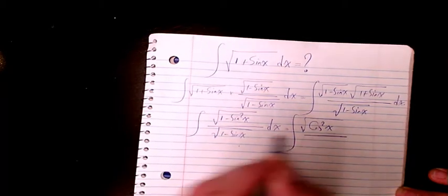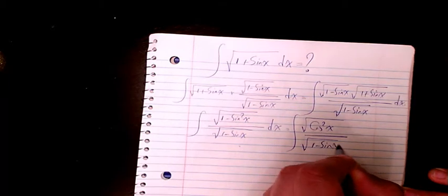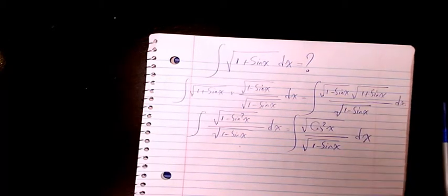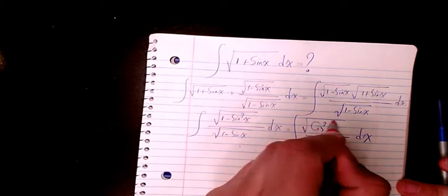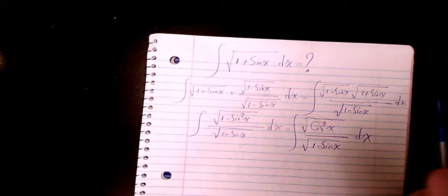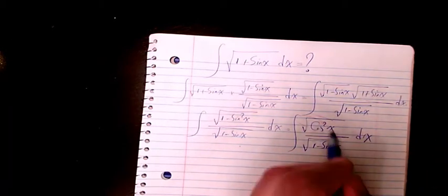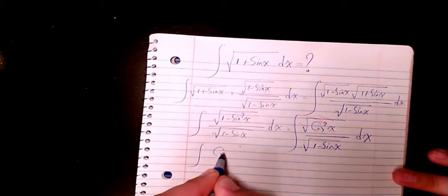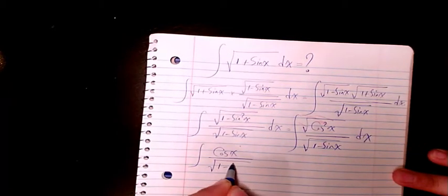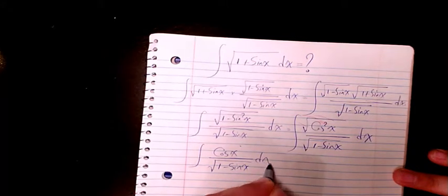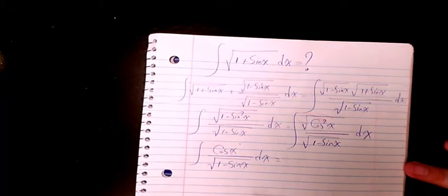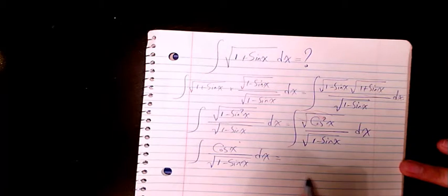Then square root cancels out with the exponent, so it will be cosine x divided by square root of one minus sine x dx. Then I can have u as square root of one minus sine x.